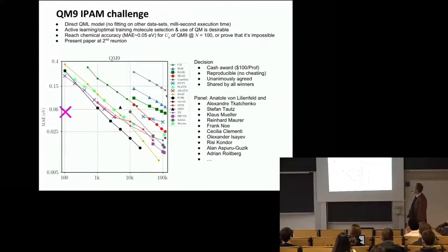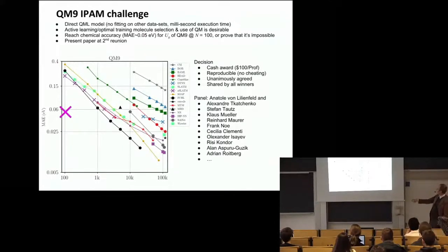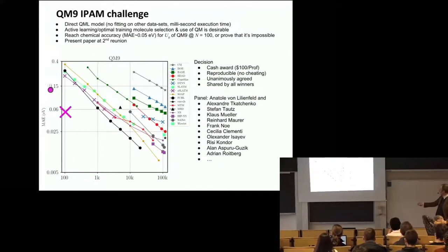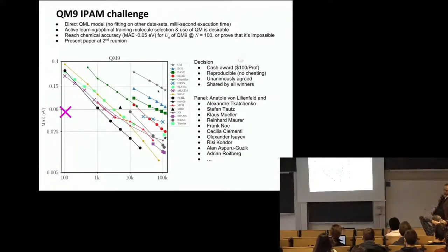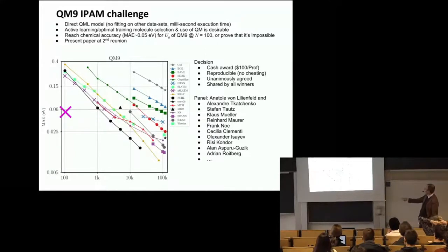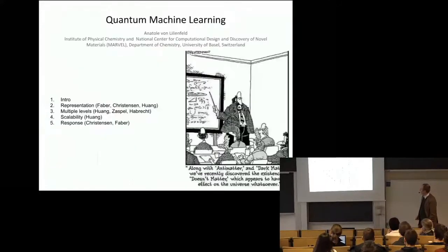This triggered our interest in actually launching a competition — we call it the QM9 IPAM challenge. We are looking for a model which reaches chemical accuracy with just a hundred training instances. The panel is a bunch of professors and everybody committed to donate a hundred dollars. If any professors in the audience wish to join this panel, please let me know. Obviously the incentive is: the more professors there are, the sooner we will have somebody who will put forth such a model.